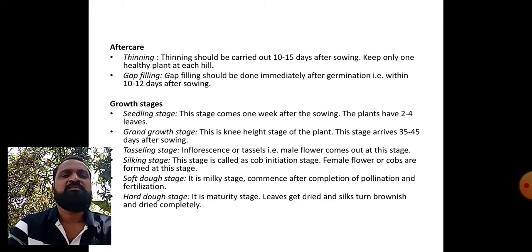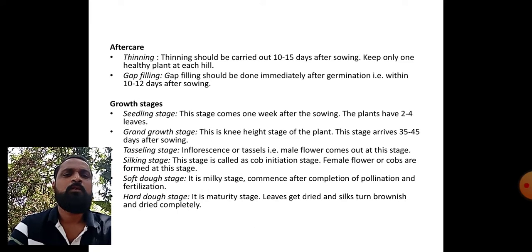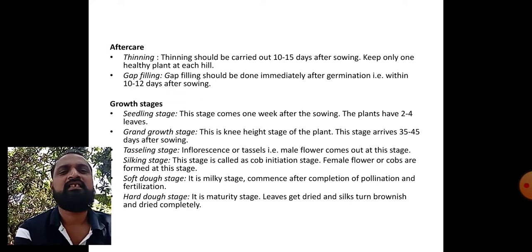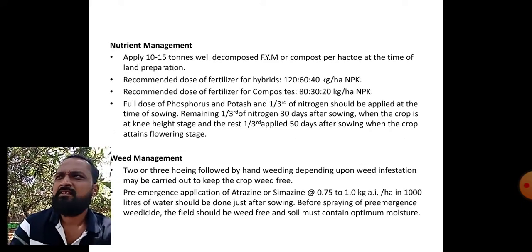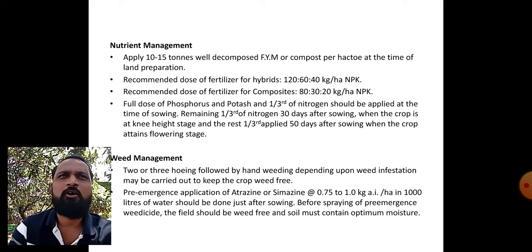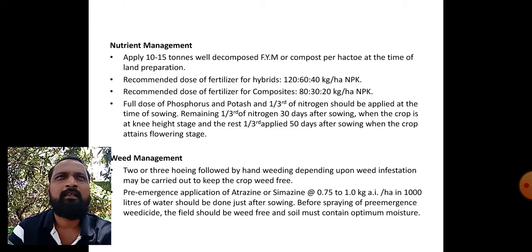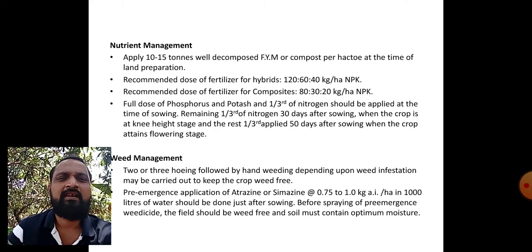Hard dough stage is the maturity stage where leaves get dried and yellow, the husk turns brownish and dries completely - then we consider the crop is ready to harvest. Nutrient management: this crop gives very good response to nutrients. Apply 10 to 15 tonnes of well decomposed FYM per hectare at the time of land preparation.